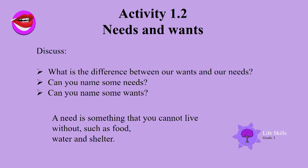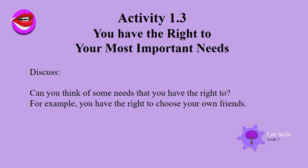Needs and wants. Discuss what is the difference between our wants and our needs. Can you name some needs? Can you name some wants? A need is something that you cannot live without, such as food, water and shelter. You have the right to your most important needs. Here's another topic to discuss with mom and dad: can you think of needs that you have the right to? For example, you have the right to choose your own friends.